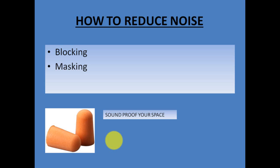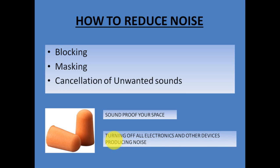Even if we have laundry machines inside our house, we can place the laundry machine in a small room and close the door — these are very simple methods to mask the noise. The third method of reducing noise is cancellation of unwanted sound. Cancellation means you are totally cutting off the source which is producing noise.